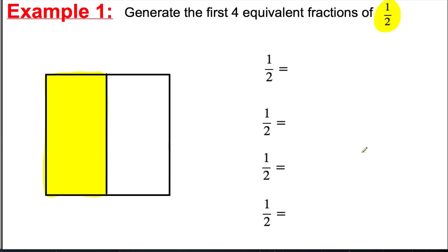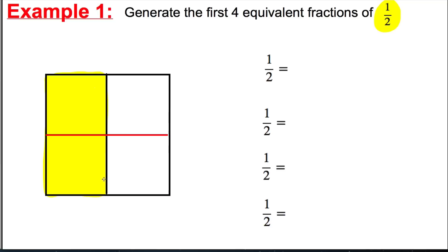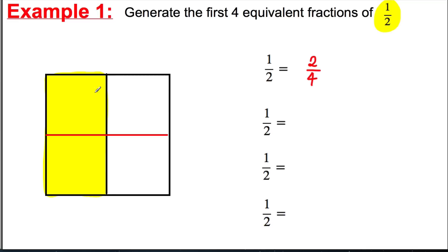We're going to colour in one side of that square to represent a half. So that there represents a half. Now there's a nice easy way to generate equivalent fractions of a half using this picture. You draw one line horizontally across the square, dividing it into two in the horizontal direction. And now you can see that a half is actually the same thing as two out of four — because you've got two little squares coloured in out of the four possible ones. That is your first equivalent fraction.